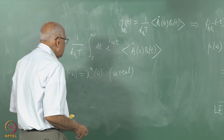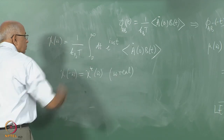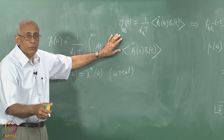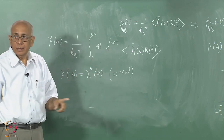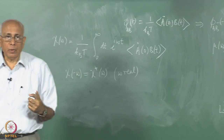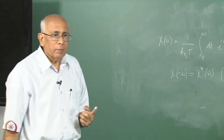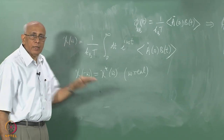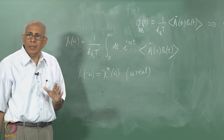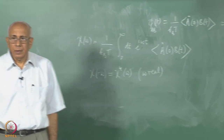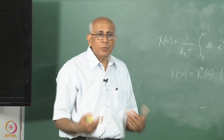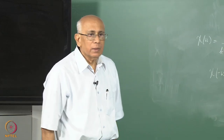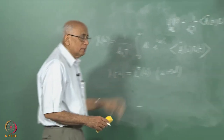If the integral defining χ(ω) exists at zero frequency, it certainly exists for complex frequencies provided the imaginary part of ω is positive, because that provides a damping factor. So χ(ω) will be analytic in the upper half of the complex ω-plane. You can write dispersion relations for it — real and imaginary parts are related by Hilbert transforms — and in particular there are no singularities in the upper half plane.